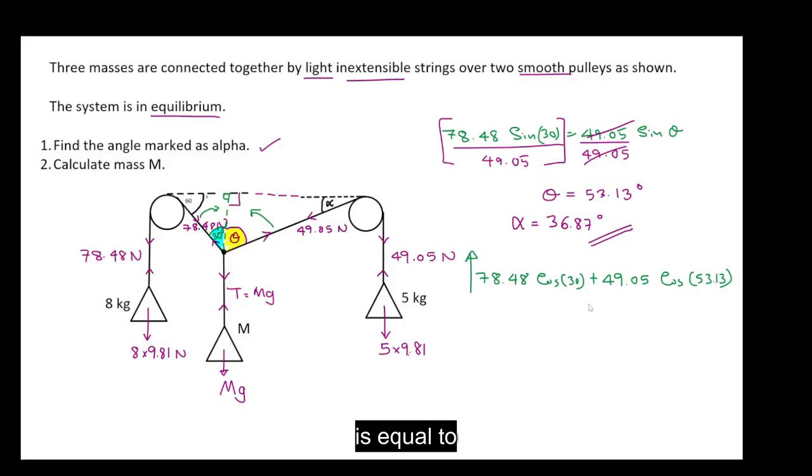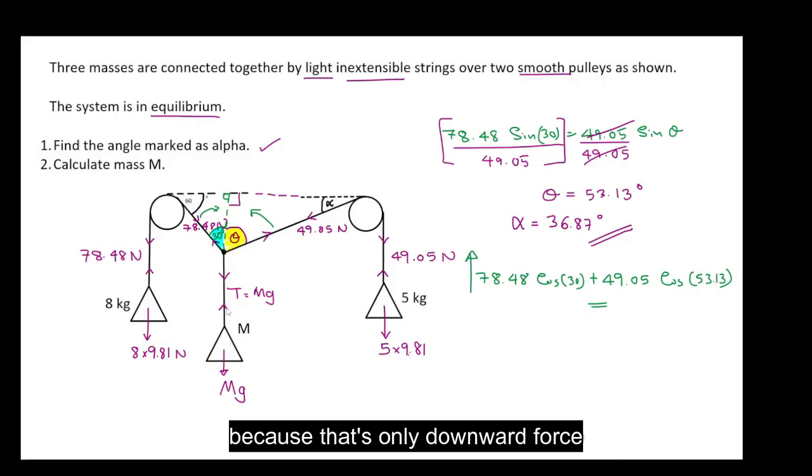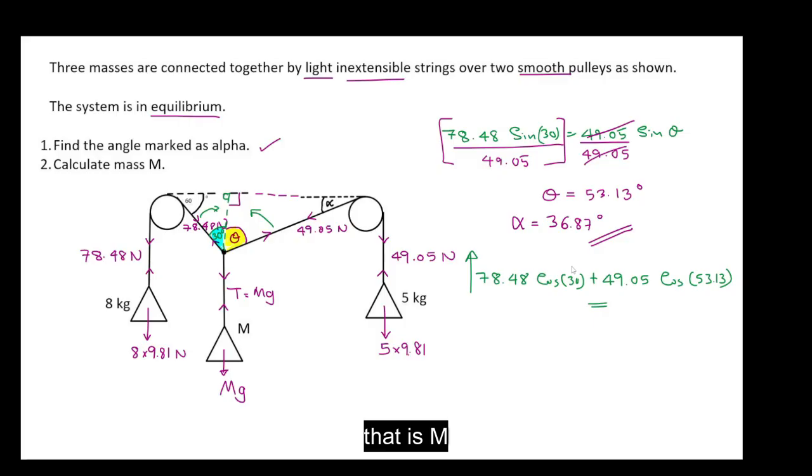is equal to the weight because that's only downward force. That is m times 9.81.